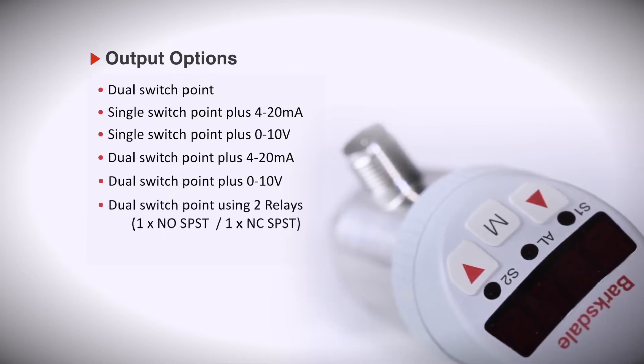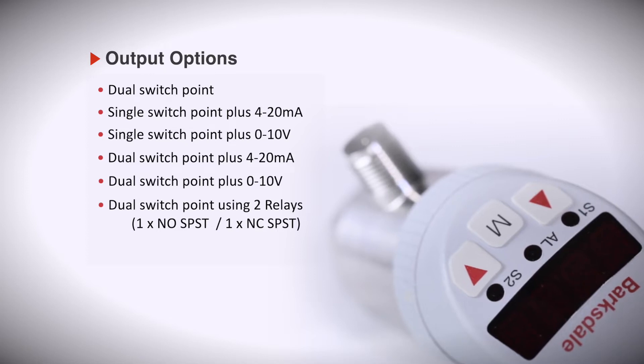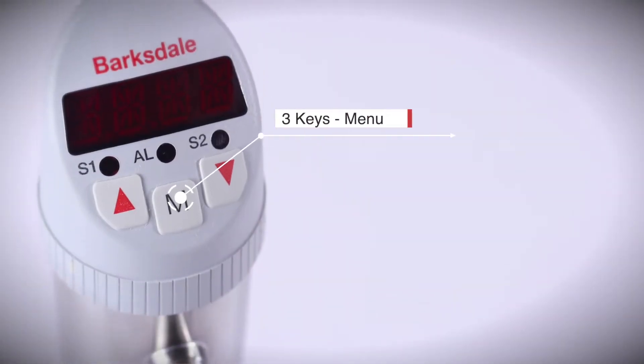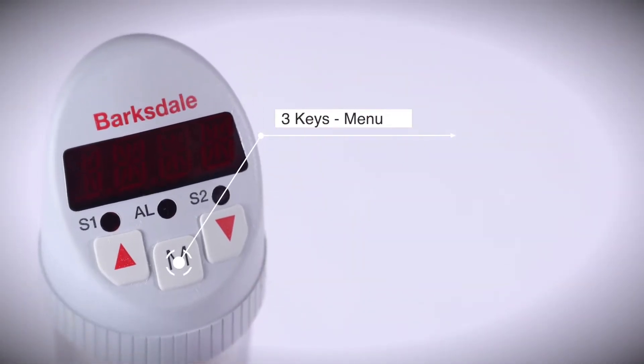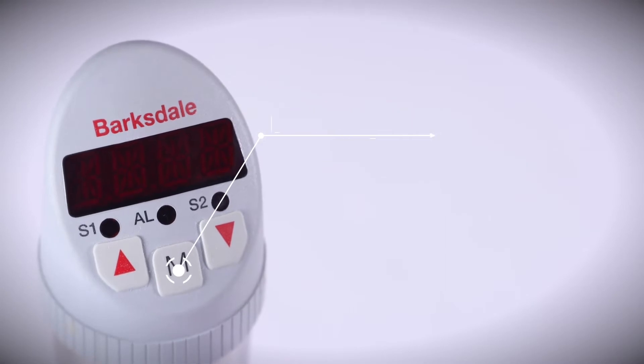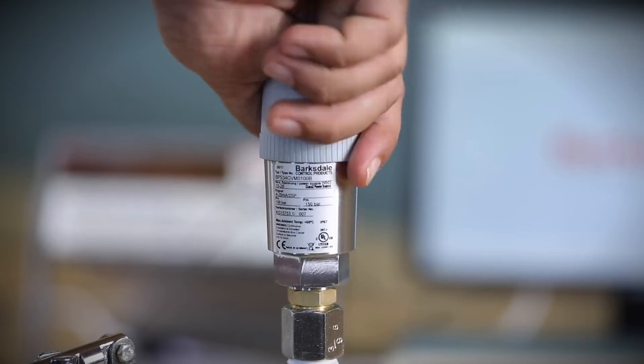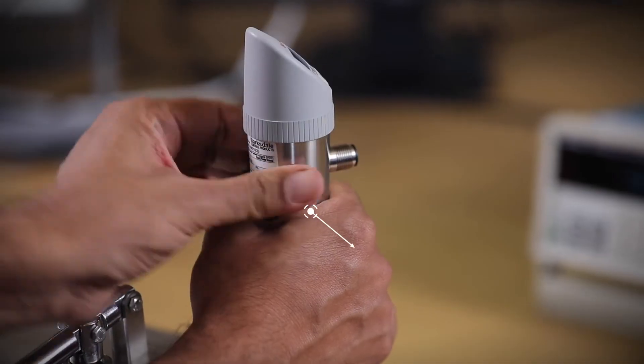Dual switch point using two relays, one normally open and the other normally closed. With IO-Link output, BPS 3000 parameters can be easily configured using a menu-driven operation via three keys.